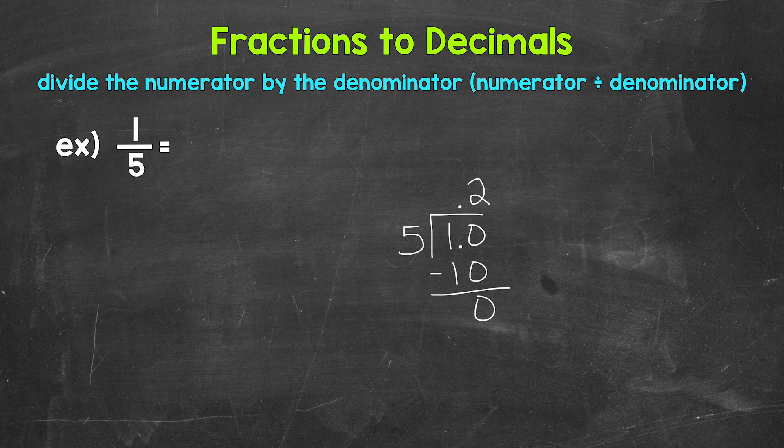1 fifth equals 2 tenths. So let's write this up: 1 fifth equals 0.2. Again, 1 fifth equals 2 tenths. So there you have it — that's how to convert 1 fifth to a decimal.